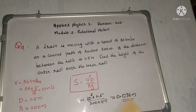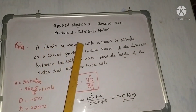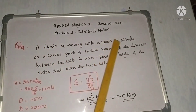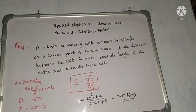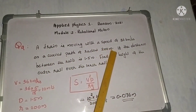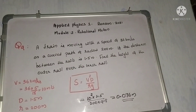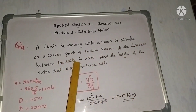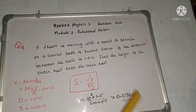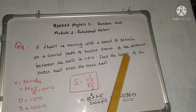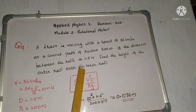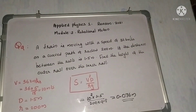Another problem: a train is moving with a speed of 36 km per hour on a curved path of radius 200 m. If the distance between the rails is 1.5 m, find the height of the outer rail over the inner rail.